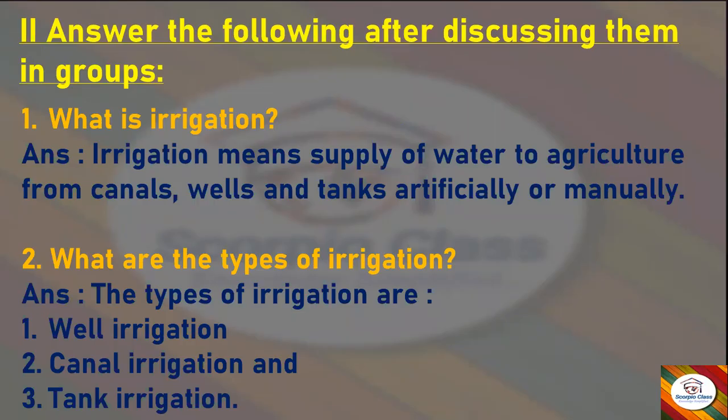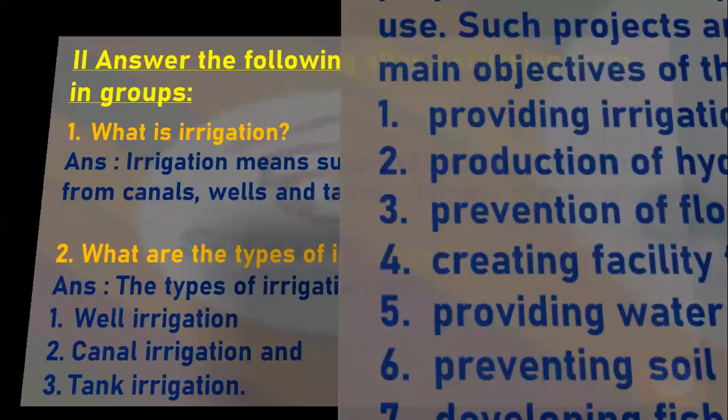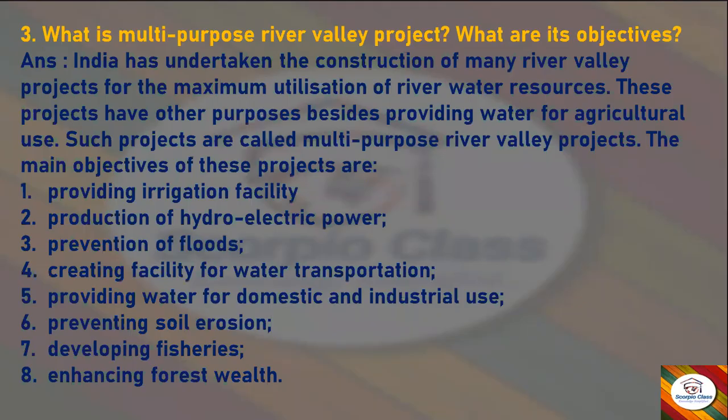The types of irrigation are well irrigation, canal irrigation, and tank irrigation. The next question is: What is a multi-purpose river valley project and what are its objectives?